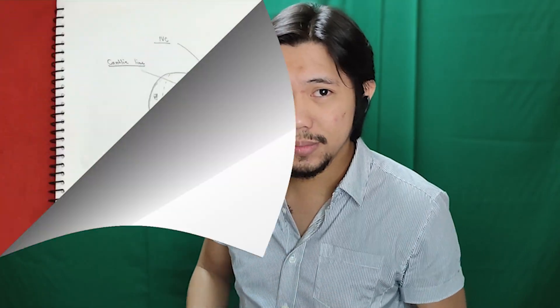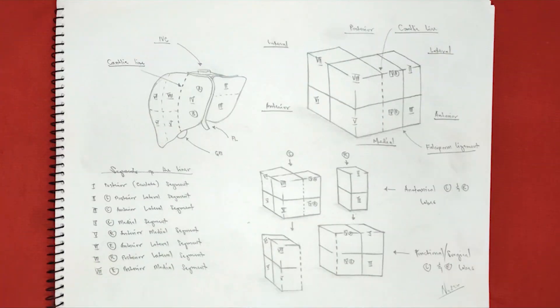Let's try some examples. Which segment is found in the left posterior lateral area of the liver? That would be segment 2. What is the other name for segment 5? Segment 5 is on the lower anterior, right side of Cantlie's line — so it's the right anterior medial segment. Which segment is in the right anterolateral portion of the liver? That would be segment 6.